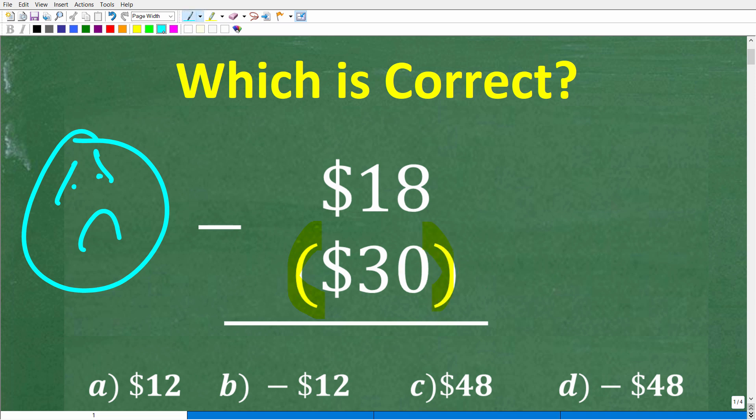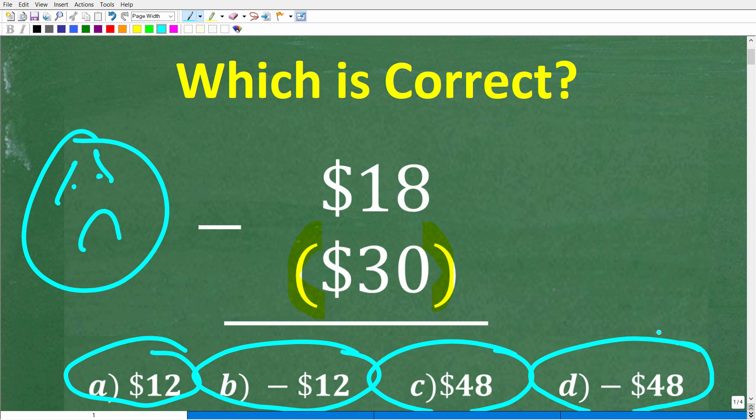But we do have a multiple choice question here, and let's take a look at our answers. So A is $12, B is negative $12, C is $48, and D is negative $48. All right, so if you have the answer, go ahead and put that into the comment section.